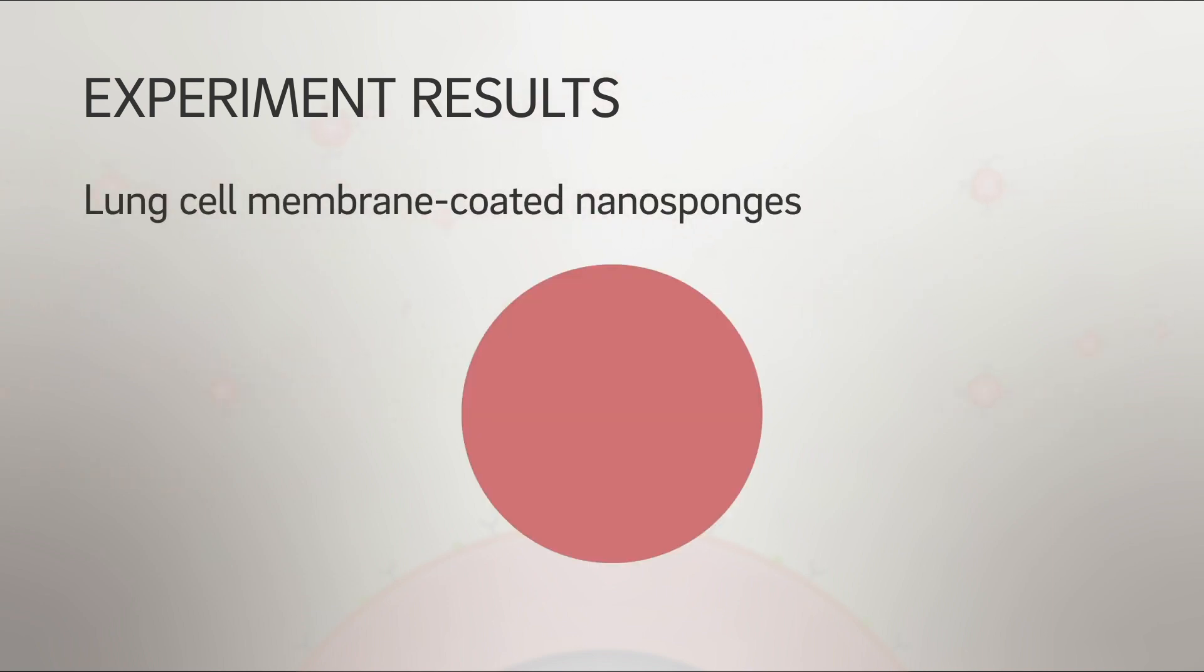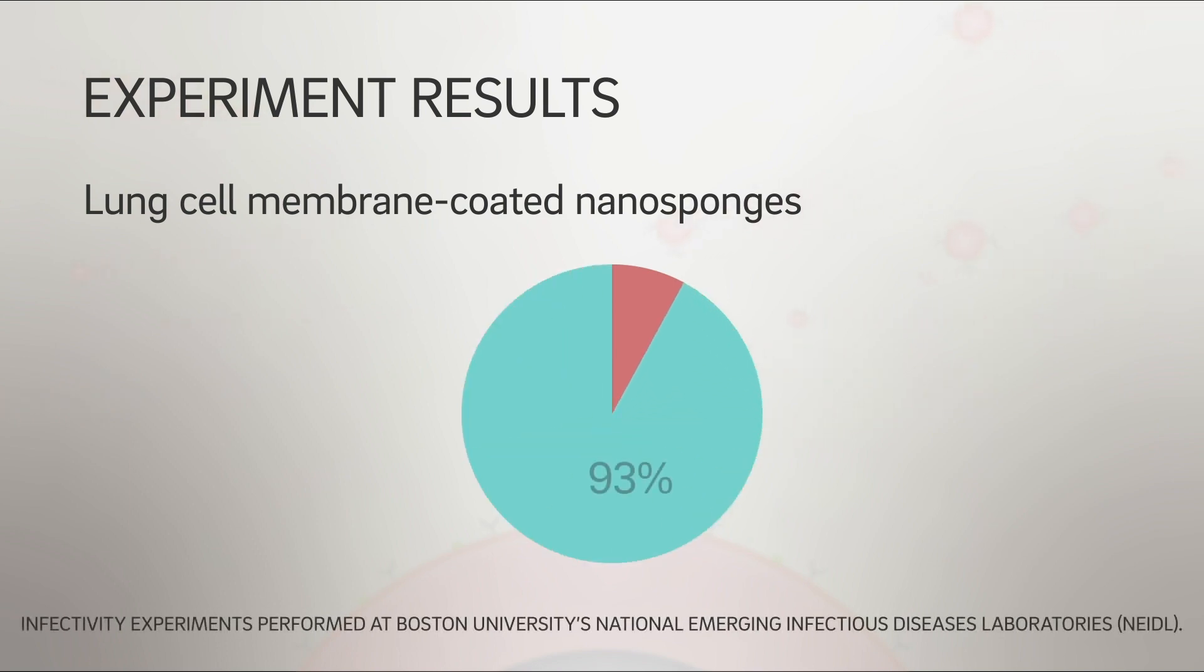Nanosponges cloaked with fragments of lung cell membranes reduced the ability of the SARS-CoV-2 virus to infect host cells grown in a dish by 93 percent.